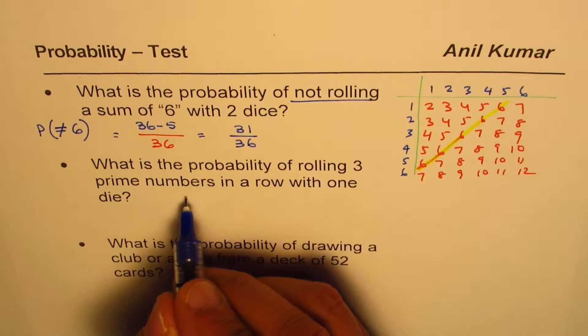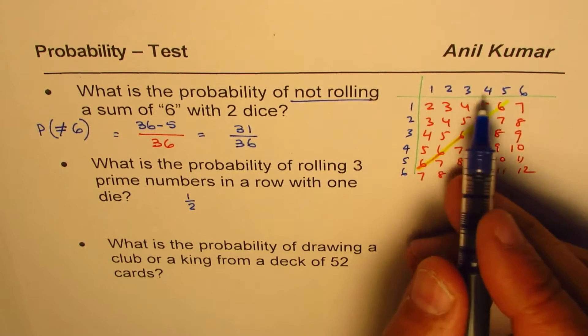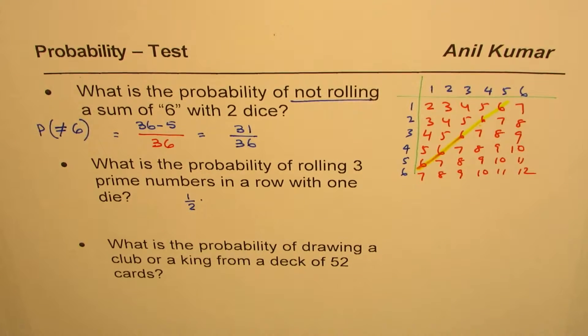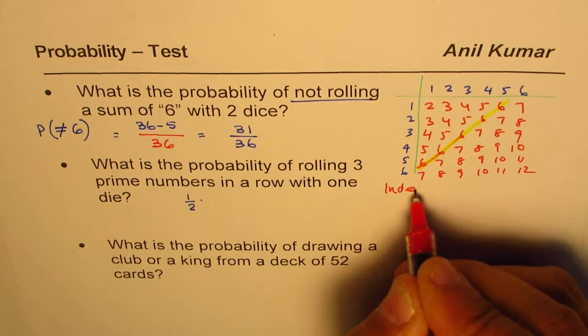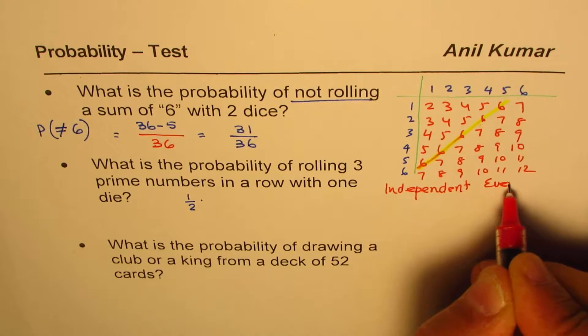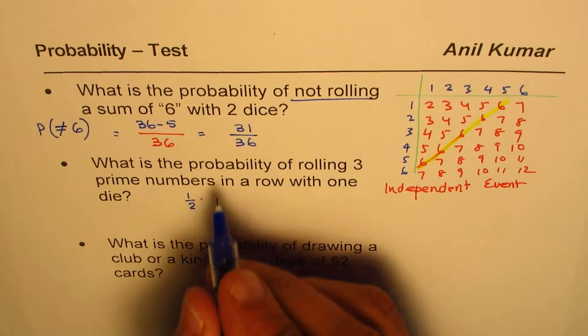Now it says what is the probability of rolling 3 prime numbers in a row. So first time it is half, correct, because half are prime, half are even. Second time, now this is independent event. The key thing to understand is second time when we roll, we know it is independent event.